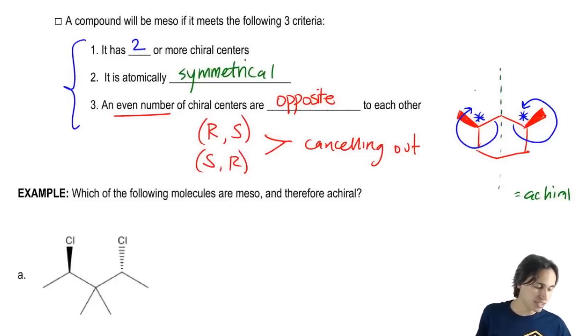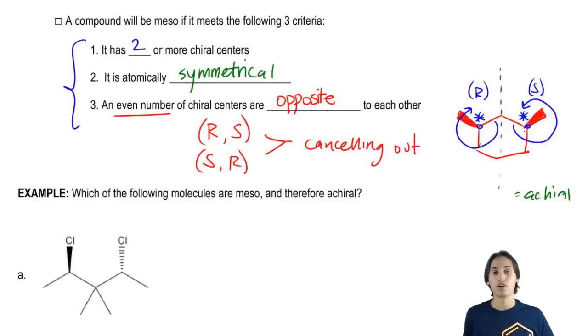So what I would find is that one of these is an R and one of these is an S, and they're symmetrical to each other. They are both the same distance from the middle. So what that means is that this is another way of proving that it's meso by looking at the configurations and saying, hey, they're opposite and they're symmetrical and there's two or more of them, so this is meso.